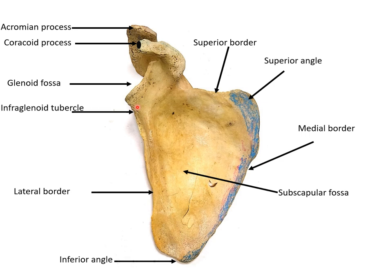Just inferior to the glenoid fossa we have the infraglenoid tubercle, and superior to the glenoid fossa we have the supraglenoid tubercle. There is also one extension - a hooked finger-like projection known as the coracoid process. Above the coracoid process is the acromion process. On the anterior or costal surface, the whole area is known as the subscapular fossa.